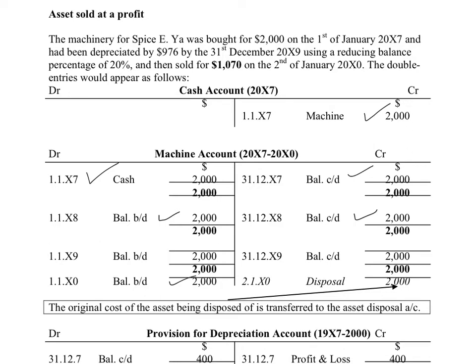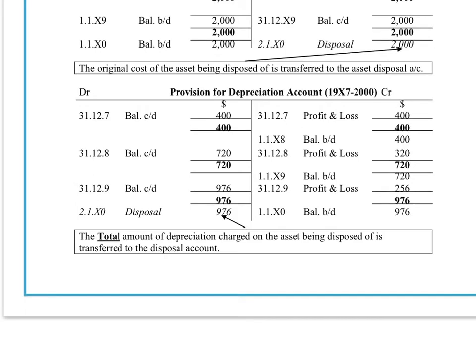We sold the asset, and the question tells us we sold it for $1,070 on the 2nd of January 2010. The first thing we need to put into our disposal account is the historic cost of the machine. The balance brought down is $2,000, so to make the machine account a dead account we would do a credit entry out of our machine account and into the debit side of the disposal account, which would leave the machine account as a dead account.